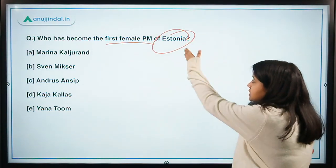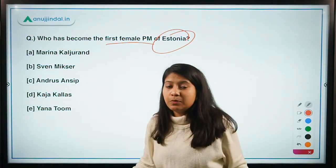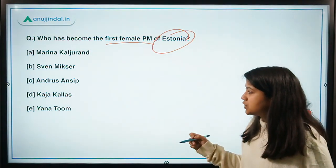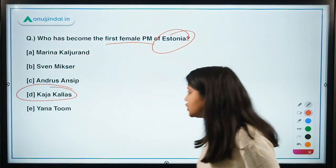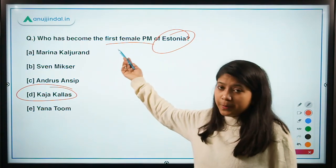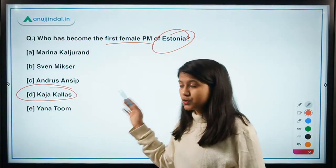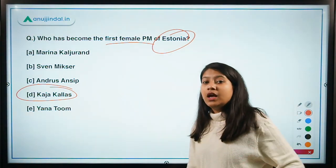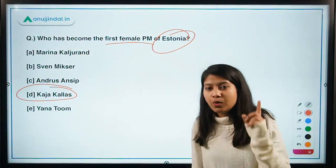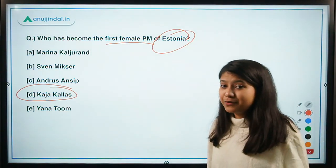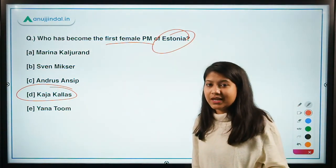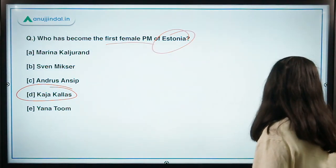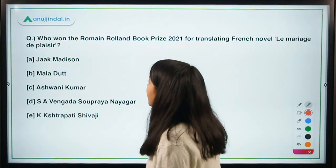Who has become the first female Prime Minister of Estonia? Estonia is a European country and it's the first time a female prime minister has been elected there. The right answer is option B — Kaja Kallas. Since it's the first female PM, there are high chances this question can be asked in the examination. My questions for you: tell me the capital and currency of Estonia — the currency is easy since it's a European country.